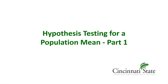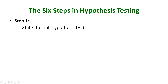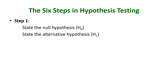Hypothesis testing for a population mean, part one. We will begin with the six steps for any hypothesis test. Step one: you state the null, and this will always have an equal-to sign. Next, you state the alternative, and this will have a less-than, a greater-than, or a not-equal-to sign.